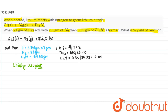Now let's find the limiting reagent. From the balanced equation: if lithium is 6 moles, then 2 moles of lithium nitride are formed. If lithium is 3 moles, then the corresponding moles of lithium nitride = (2/6) × 3 = 1 mole.